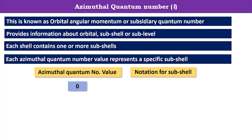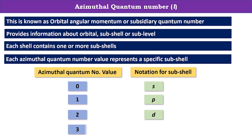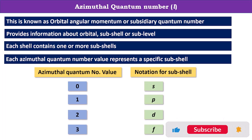If the value of the azimuthal quantum number is 0, then the notation used for this subshell is S. If the value is 1, we call it the P subshell. If the value is 2, we call it the D subshell. If the value is 3, then F is the subshell notation.